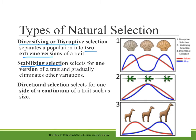Finally, we have directional selection, which selects for one side of a continuum of traits. This is usually seen with something like size. The picture here shows how a giraffe may have developed its long neck — a particular body structure is more favorable and survives more often, so instead of having all different sizes, we see a particular species moving toward one particular size.